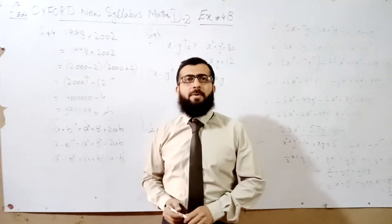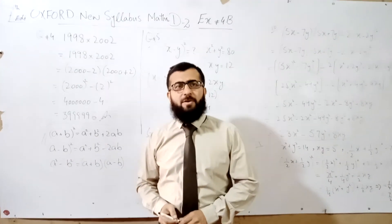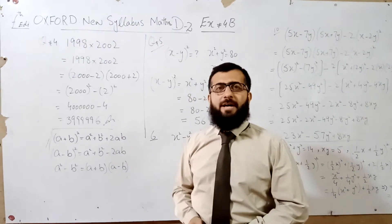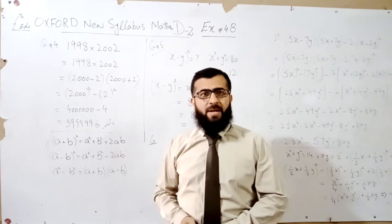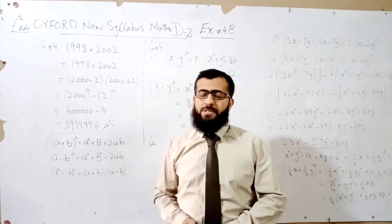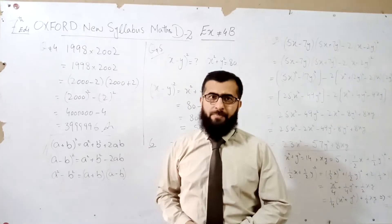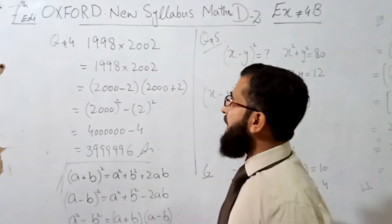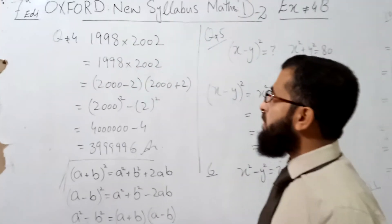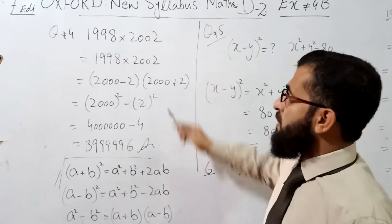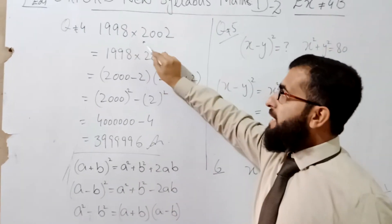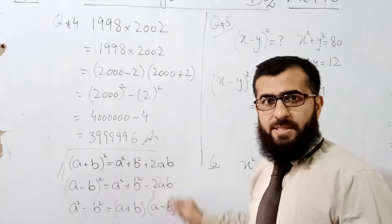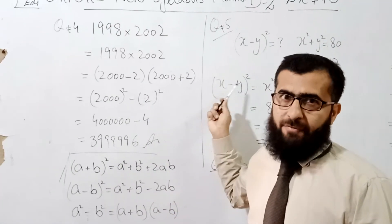Assalamu alaikum warahmatullahi wabarakatuh. Now we will start Exercise 4B from question number 4. We have 1998 × 2002, so we will apply the algebraic formulas to the given questions.